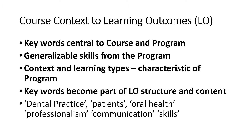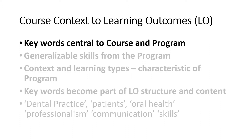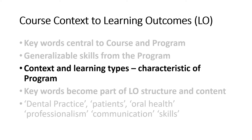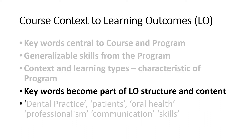Let's discuss the context of the course and its relation to learning outcomes, in short, we call them LOs. Brainstorming the essential keywords that are central to the course or program is very important in writing the LO and the lesson objectives. This can be identified from the generalizable skills that a student will ultimately learn from the course or program. The context and type of learning is unique and characteristic to the program or course, and these should be considered as potential keywords. The identified keywords will provide a contextual relationship of the learning outcome objectives to the program or course.